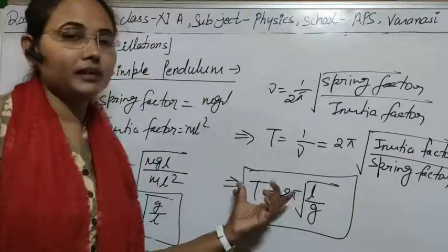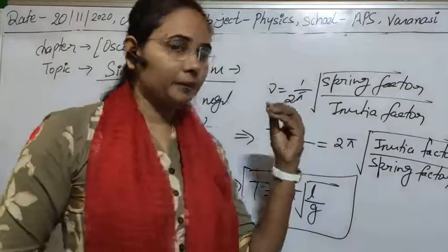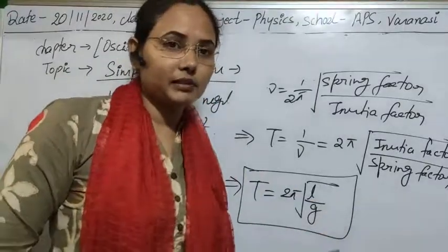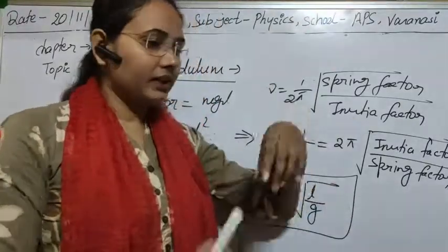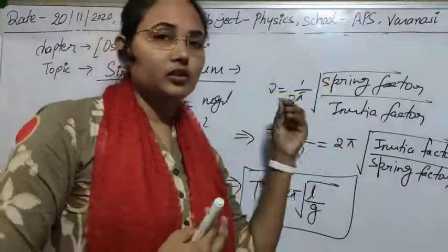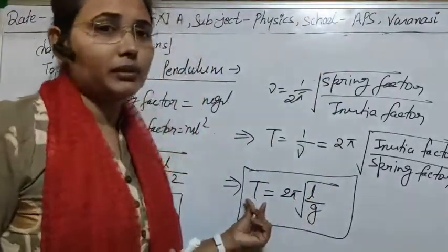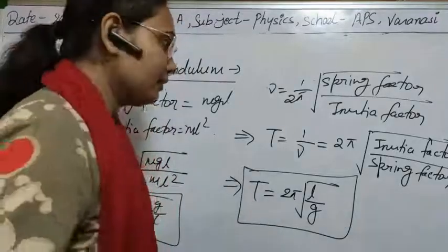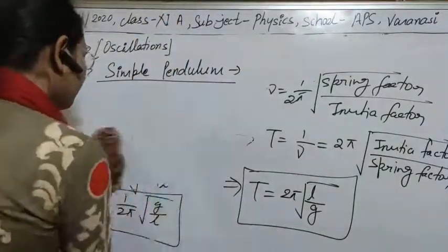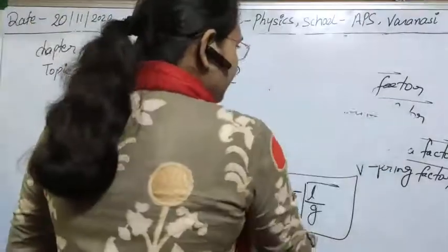With this formula we can easily calculate the time period of a simple pendulum if we know the acceleration due to gravity at the location where we are performing the experiment and the length of the thread.